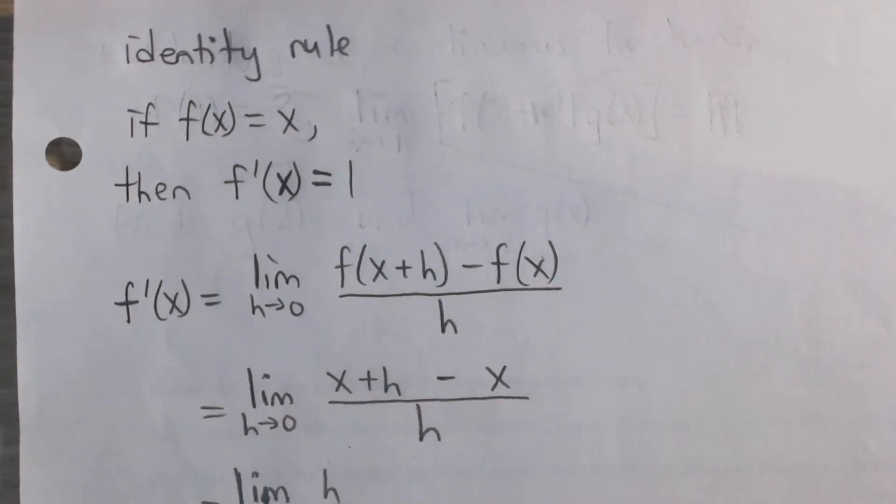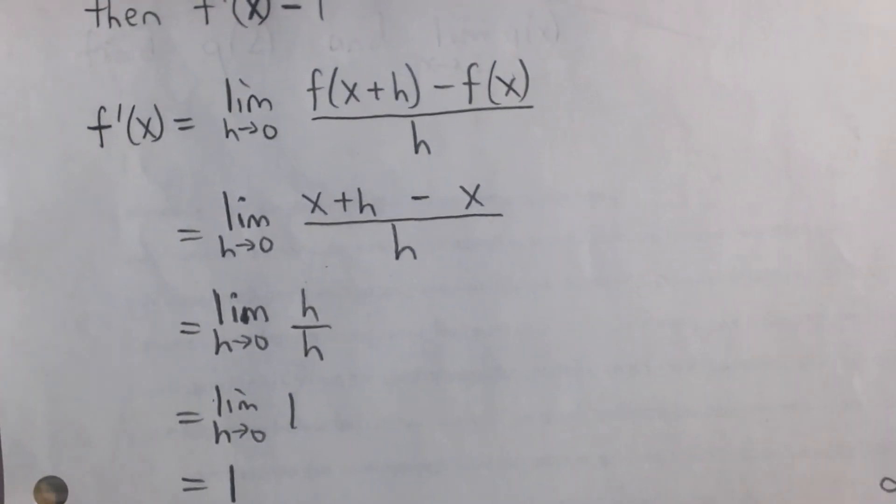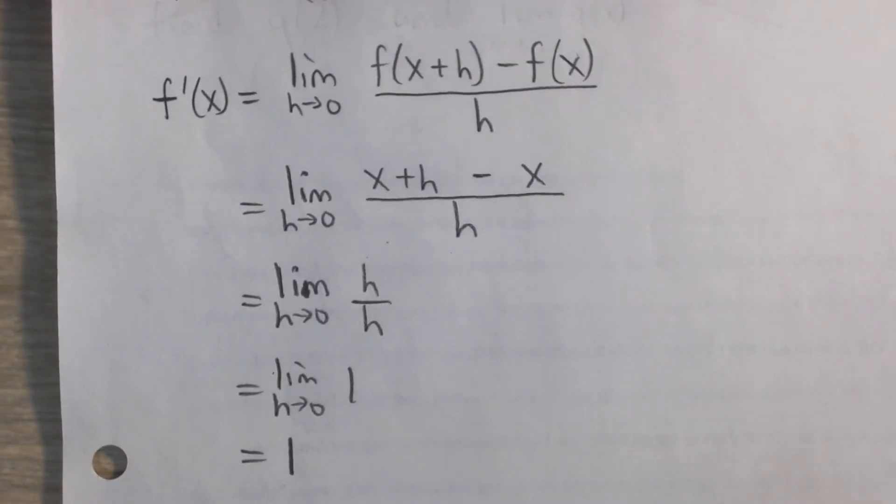So I have x plus h minus x. Let's simplify that. x minus x cancels out. We have limit as h approaches 0 of h over h, which is just 1.